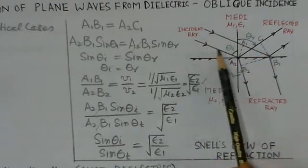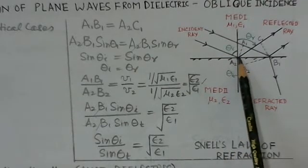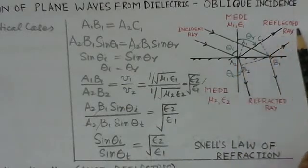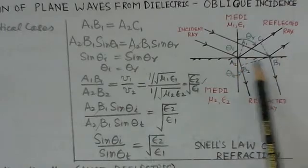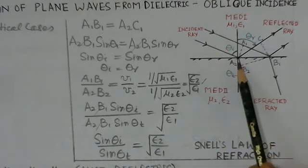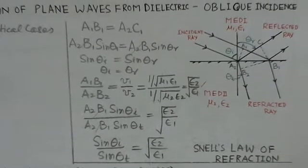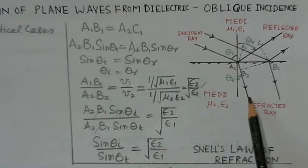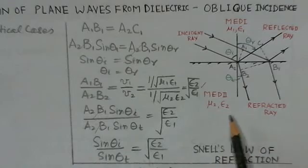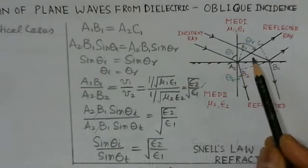The incident ray is reflected obliquely to this interface, and these rays are reflected from this interface. Part of this incident wave is also refracted into the second medium. Now we will try to see Snell's law and how these incident angles theta i and theta r are related. Now we observe from these waves here, waves in medium 1.